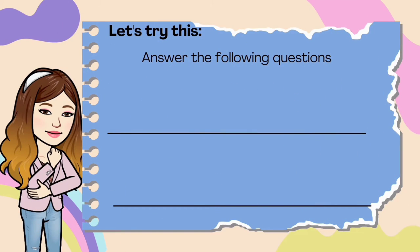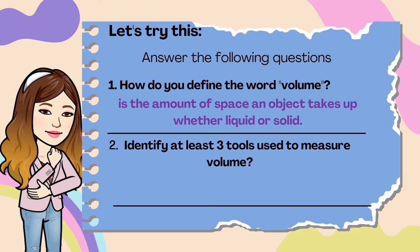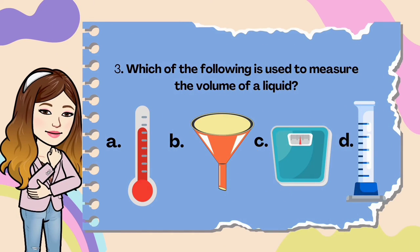Let's try this — answer the following questions. How do you define the word volume? It is the amount of space an object takes up, whether liquid or solid. Number two: identify at least three tools used to measure volume. We have meter stick, graduated cylinder, cubic centimeter, and etc. Number three: which of the following is used to measure the volume of a liquid? The answer is letter D, the graduated cylinder.